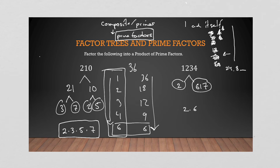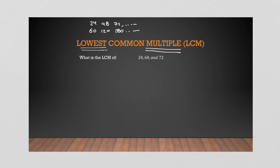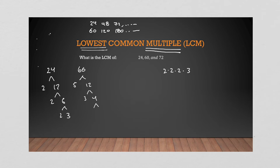We can't divide 617 by 23 either, so 617 is prime. That means 1234 = 2 × 617. Now, to find the lowest common multiple of 24, 60, and 72 — remember, the LCM must be a multiple, not a factor. People see 'lowest' and think it'll be 12 or 4, but it has to be a multiple. So we break each number down: 24 is 2 × 2 × 2 × 3.